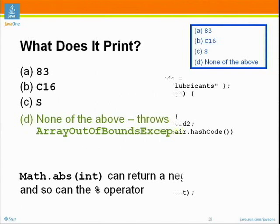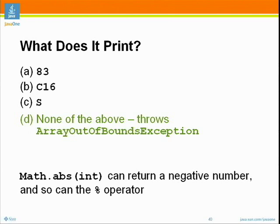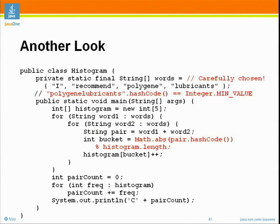The answer is none of the above — it always throws an ArrayIndexOutOfBoundsException. The intuition is that Math.abs does not necessarily return a non-negative value, and the mod operator doesn't necessarily return non-negative values either. Let's take another look. These words were chosen very, very carefully. It turns out that the hash code of the string 'polygene lubricants' is Integer.MIN_VALUE.